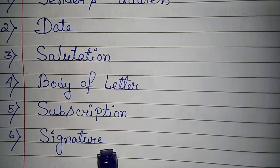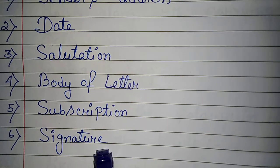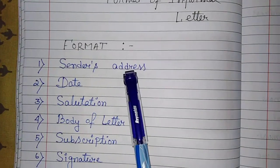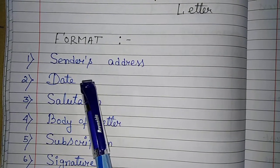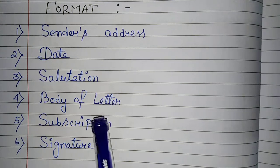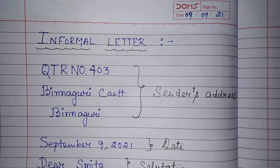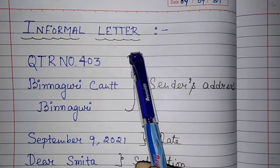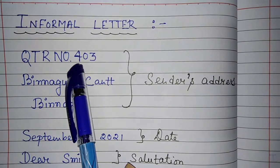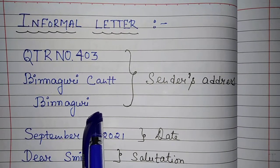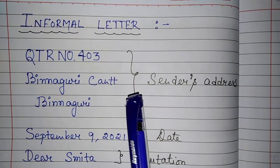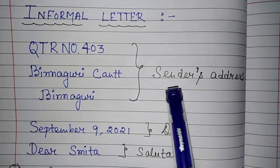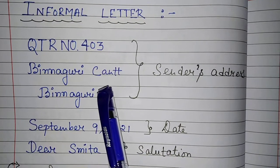In the case of a formal letter, designation is included, but for an informal letter, just your name should be there. So the format of an informal letter is: sender's address, date, salutation, body of the letter, subscription, and signature. Now here is an example of an informal letter. The first part is the sender's address — you can see I have written an address here as an example.